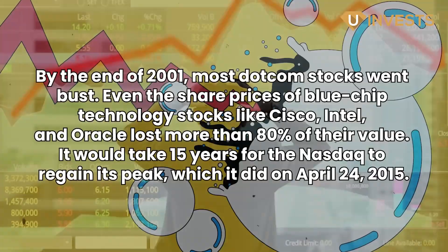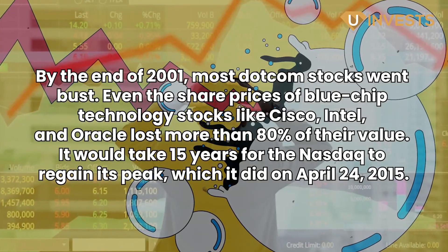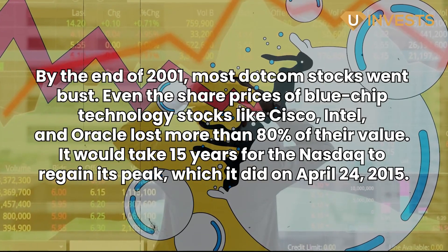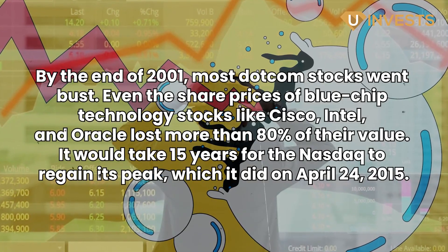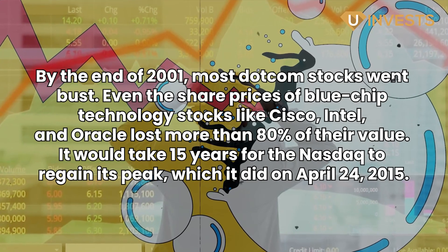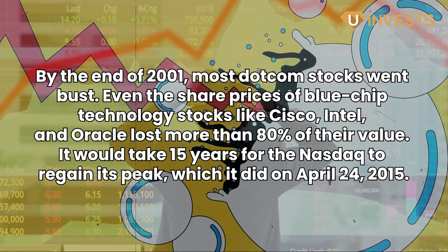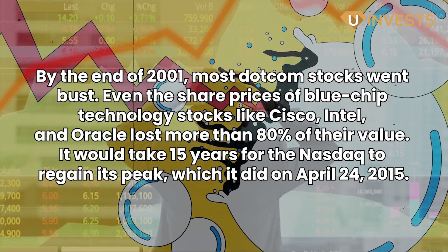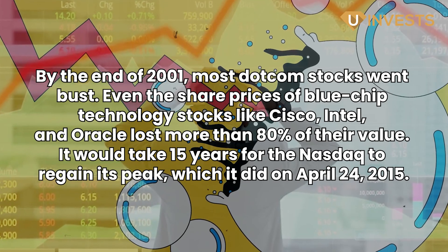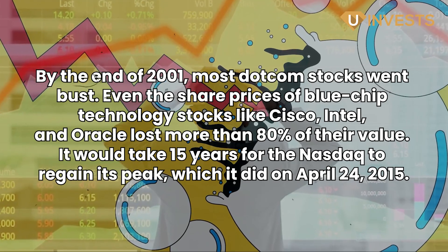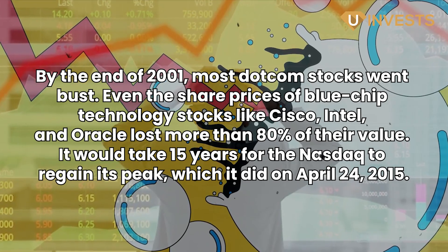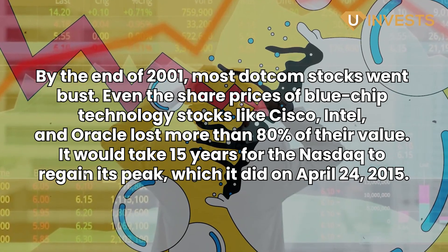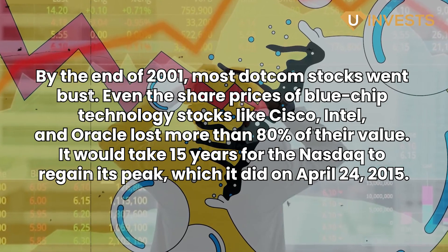By the end of 2001, most dot-com stocks went bust. Even the share prices of blue-chip technology stocks like Cisco, Intel, and Oracle lost more than 80% of their value. It would take 15 years for the NASDAQ to regain its peak, which it did on April 24, 2015.